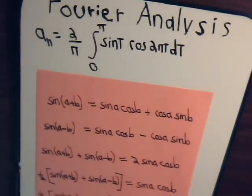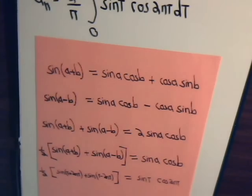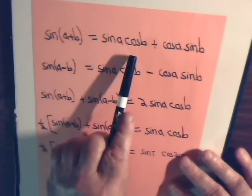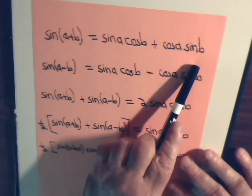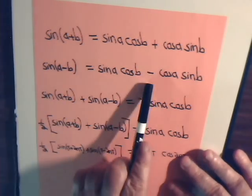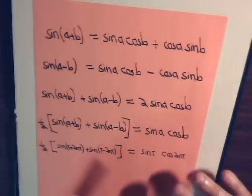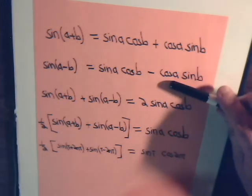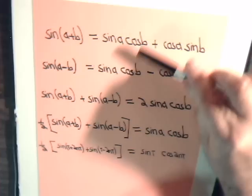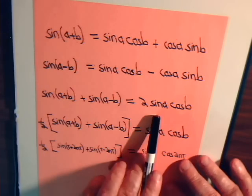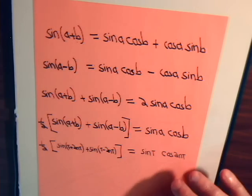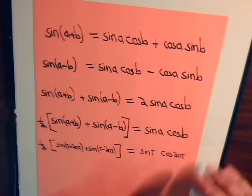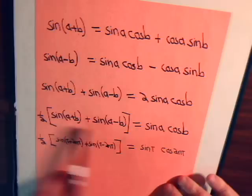Remember that sine(a+b) equals sine a cosine b plus cosine a sine b. Same thing here, so now this becomes minus sine. If we add these two expressions together, these cancel out. So we'll have 2 times sine a times cosine b, or sine a times cosine b equals this expression.